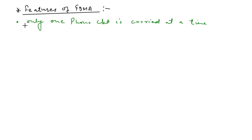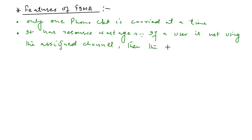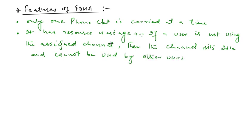This is the first feature of FDMA. Additionally, if a channel is not in use in an FDMA system, it sits idle and cannot be used by other users — making it a wasted resource and a drawback of the system. Because if a user is not using the assigned channel, that channel cannot be utilized by anyone else, resulting in resource wastage.